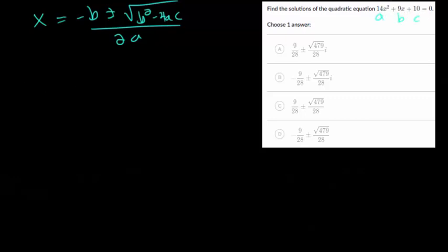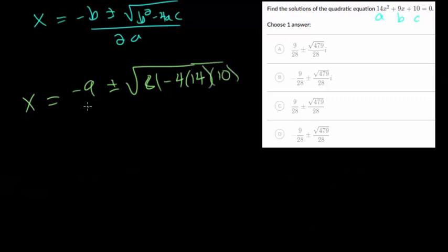So we have the opposite of b, so that's opposite of 9 which is negative 9, plus or minus b squared which is 81 minus 4 times a which is 14 times c which is 10. And then all over twice a, twice 14 would be 28.